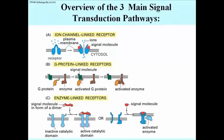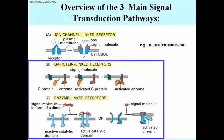Here are three main pathways for signal transduction, officially defined as the process of getting an extracellular signal inside the cell when the signal molecule itself cannot cross the membrane. The first one is ion channel-linked receptors, which are characteristic of neurotransmission, as we've already seen. We're going to focus on signal transduction by G-protein and enzyme-linked receptors.